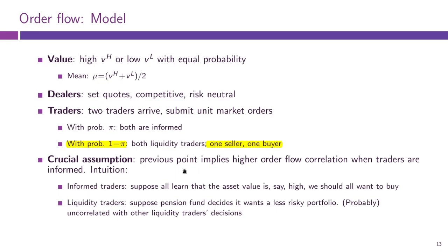With probability pi both of these orders will come from informed traders - from someone who knows the true V - and so both orders will be for one unit of the asset. While with probability one minus pi, both of these orders are coming from uninformed traders, from liquidity traders. In that case we assume one of them is willing to buy and one of them is willing to sell.